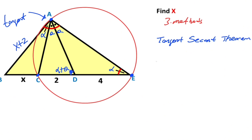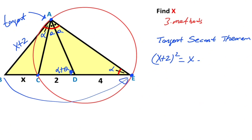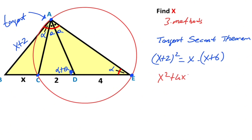According to the tangent-secant theorem, (X plus two) squared must be equal to X times the whole length (6 plus X). Therefore, X squared plus 4X plus 4 equals X squared plus 6X. These cancel again, and that means X is going to be two units.